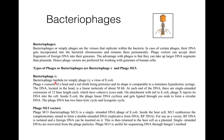Phage M13, or bacteriophage M13, is a single-stranded DNA phage of E. coli. Inside the host cell, M13 synthesizes a complementary strand which forms double-stranded DNA — the replicative form, or RF DNA. For use as a vector, RF DNA is isolated and foreign DNA can be inserted into it, which is then returned to the host cell as a plasmid. Single-stranded DNA is recovered from phage particles. M13 is useful for sequencing DNA through Sanger's method.